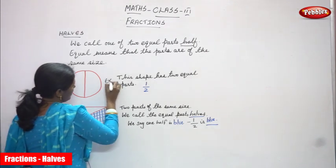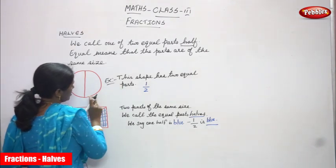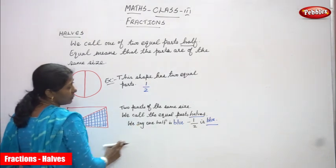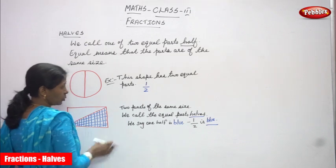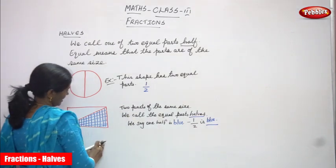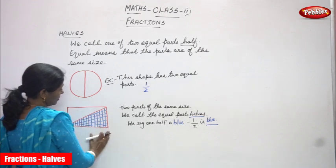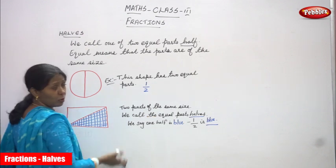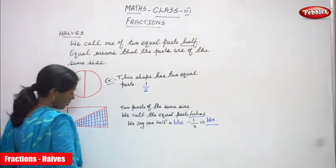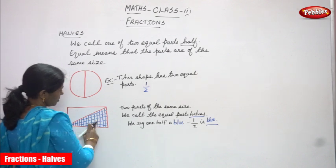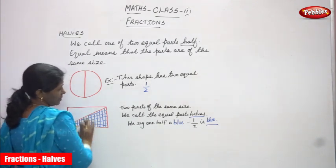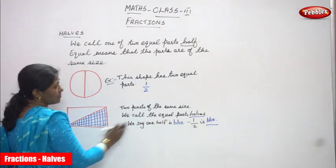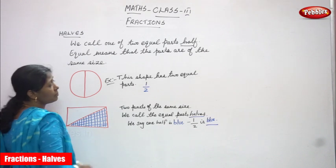The next example is a circle and after this the next one is a rectangle. Two parts of the same size we call equal parts. This is the rectangle. I cut it into equal halves — two parts of the same size. We can call them halves. We say one half is blue. One half is blue, and the other one is plain white color. So we say one half is blue, that is called as 1 by 2. This half of the part is blue in color.